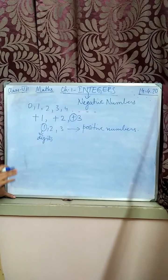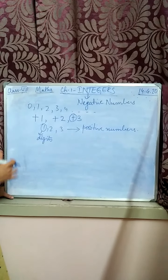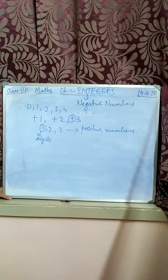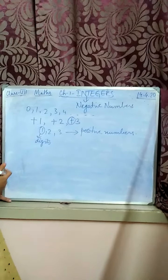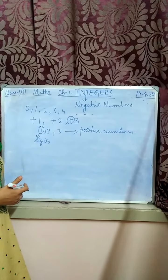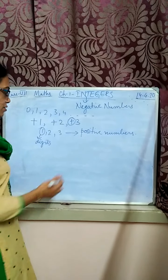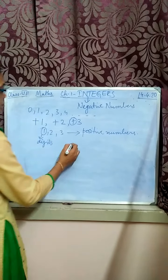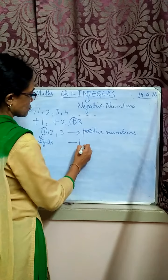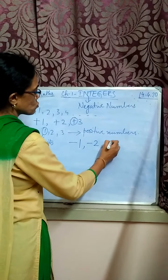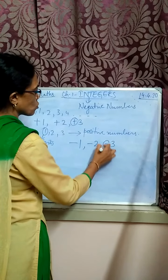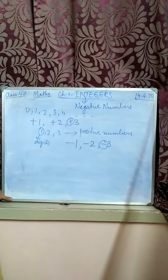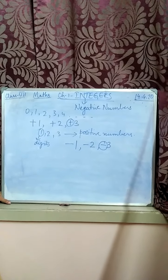You have never seen or utilized negative numbers because they have not come across you. Why will you study negative numbers? Negative numbers means they are having a minus sign — minus 1, minus 2, minus 3. Now what is the utility of this minus sign? Why do we study the minus sign?